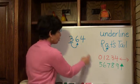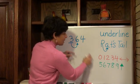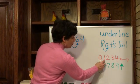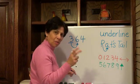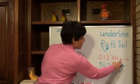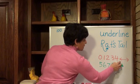Well, how would I know? Let's look over here. If the rat's tail goes to 0, 1, 2, 3, or 4, which is kind of like the smaller numbers, the underlined number stays the same.